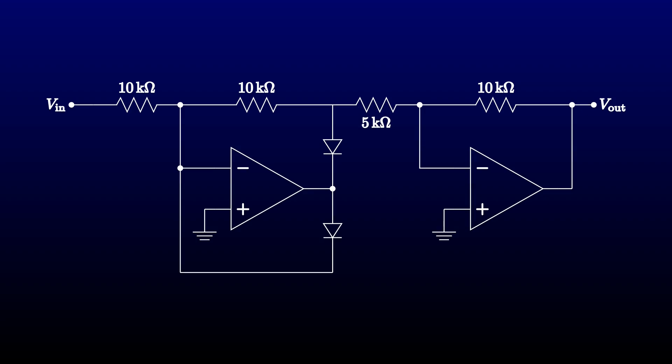If I were to leave it there, we'd have a half-wave rectifier with a gain of 2. But I'm also going to add a 10k resistor from the circuit input. That will subtract the original input signal from the result.